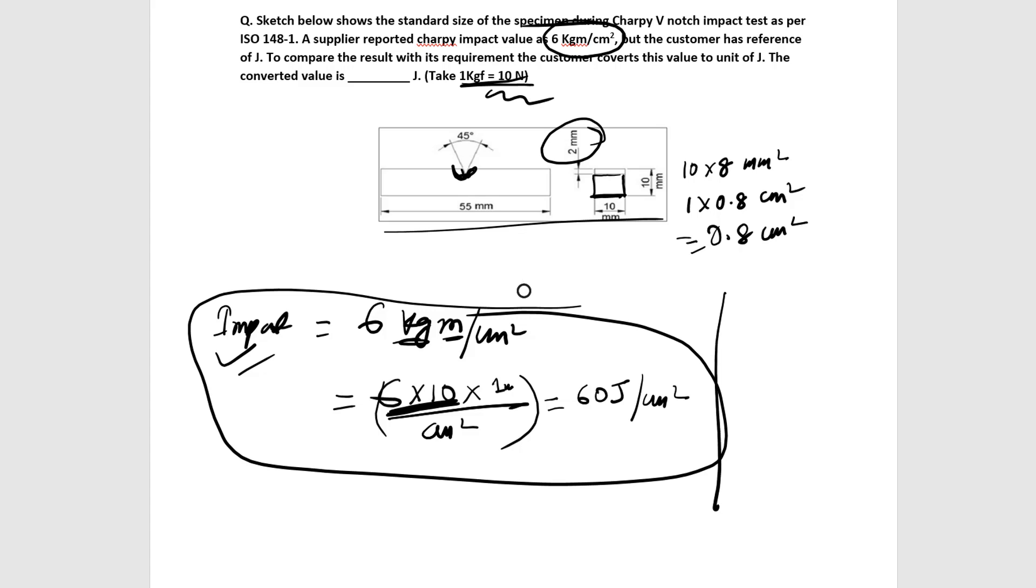Now to convert this into Joule what we'll do, we'll multiply this with the area. Basically 60 Joule per cm square into the cross-sectional area.